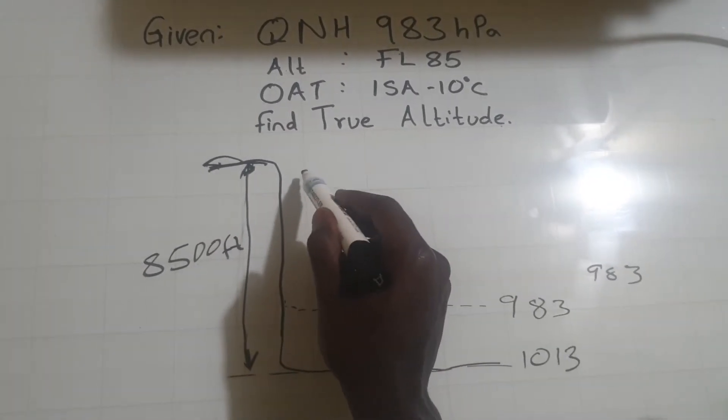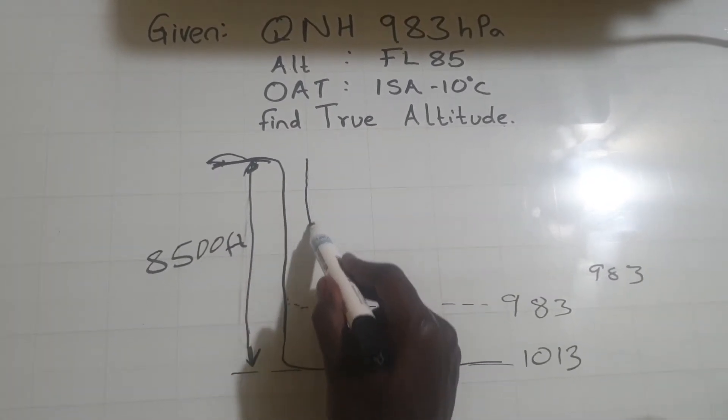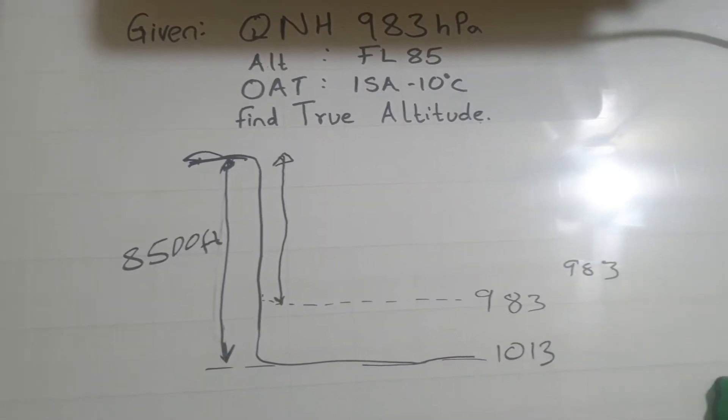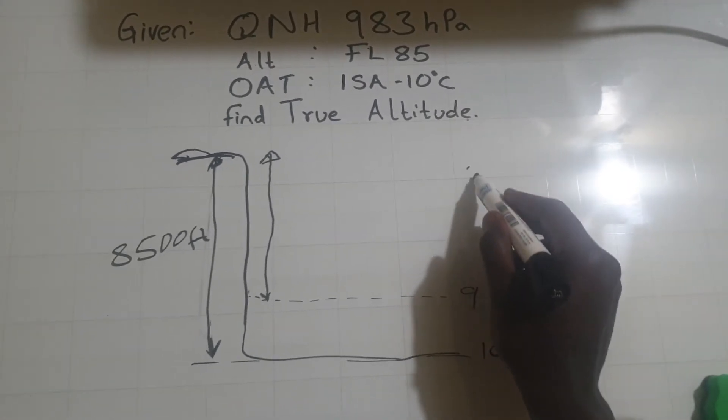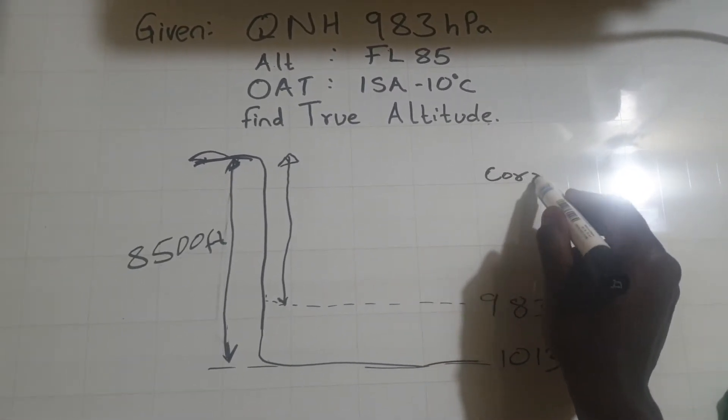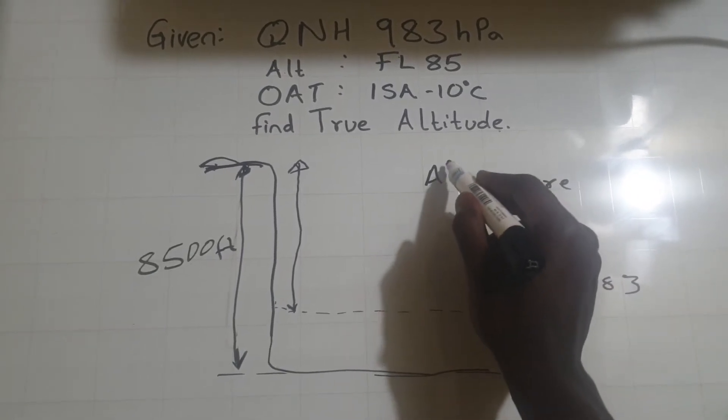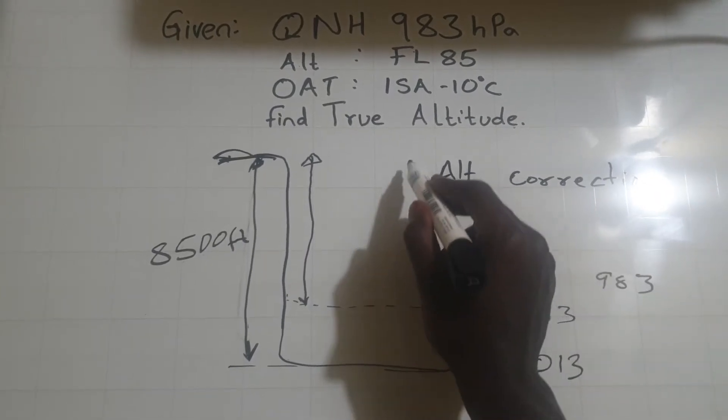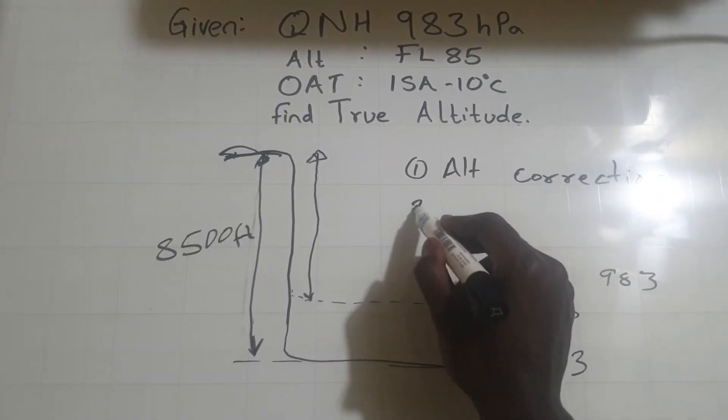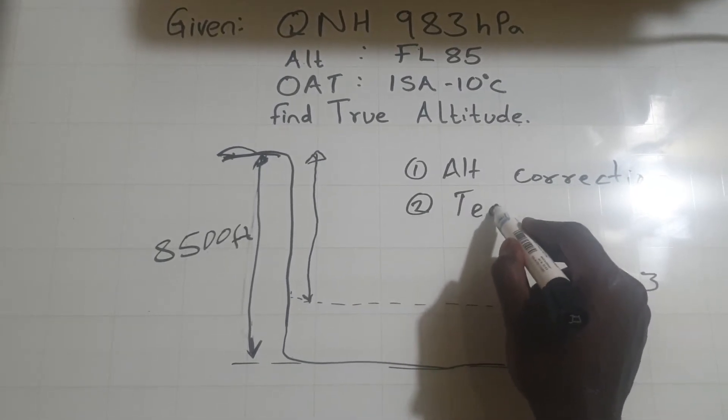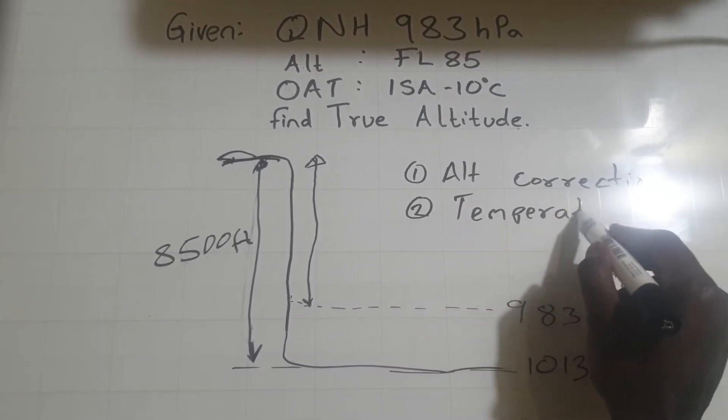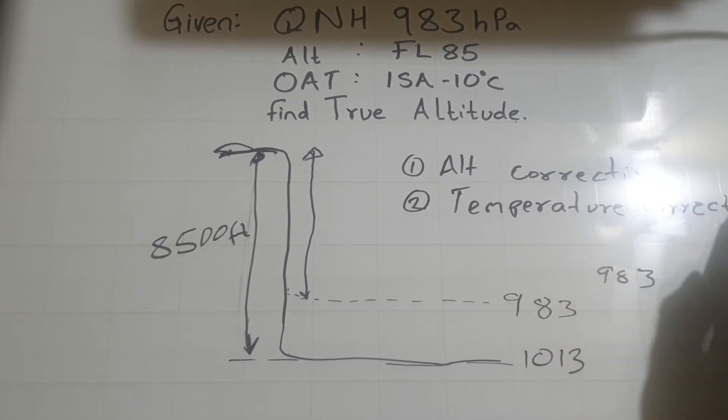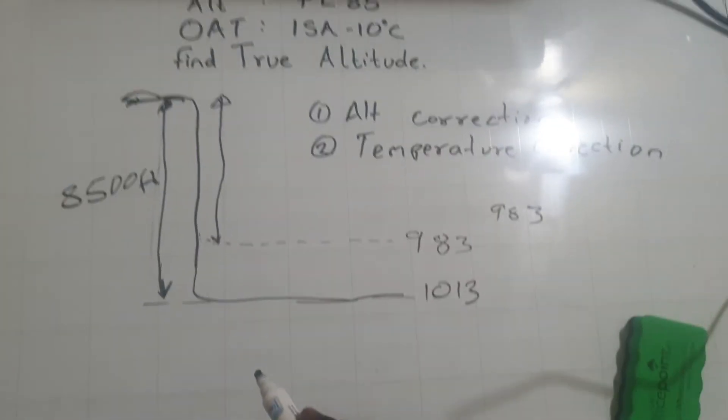So this distance is what you're looking for. So this question has two parts. The first one is altitude correction, and the second one is temperature correction.